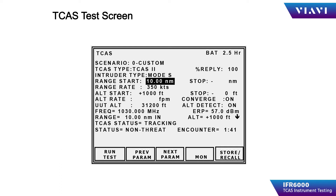Pressing the TCAS instrument key initiates the TCAS test instrument. The IFR 6000 can be used for over-the-air testing of aircraft systems. The TCAS test operation screen is where the operator can configure the physical parameters of the simulated target, such as start distance, altitude, altitude rate, and velocity.